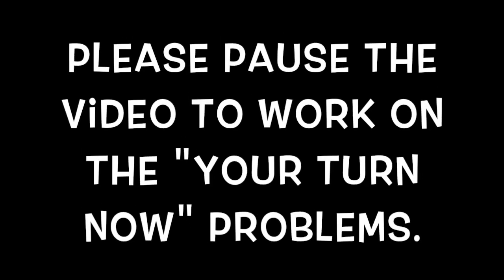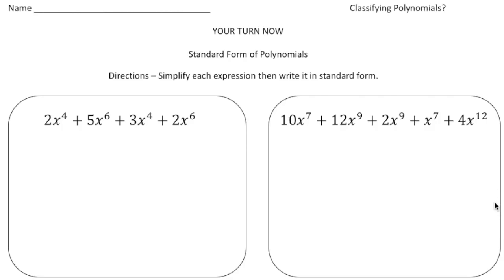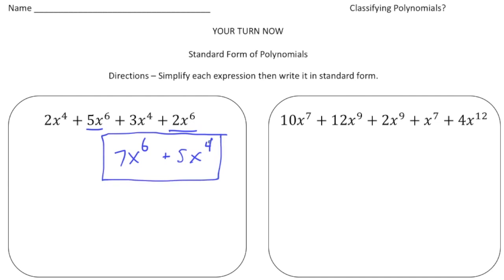Welcome back. The first expression has four terms. Notice that 5x to the sixth and 2x to the sixth are like terms, so we combine them to get 7x to the sixth. We also have 2x to the fourth and 3x to the fourth — those are like terms — so we get 5x to the fourth. Making sure the terms are in order from highest to lowest degree, going from six to four, that's the first answer.